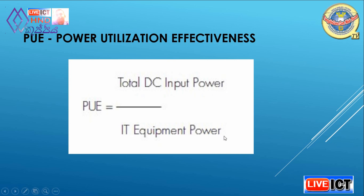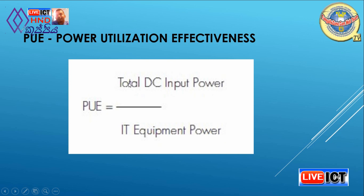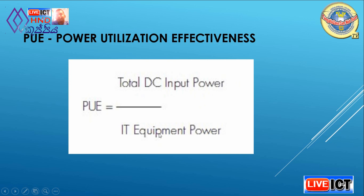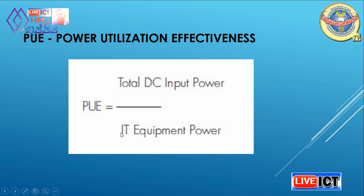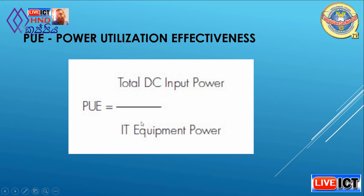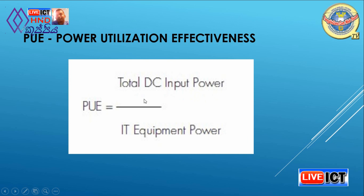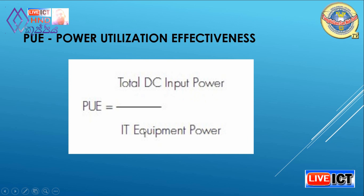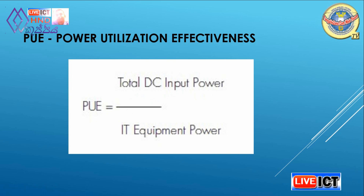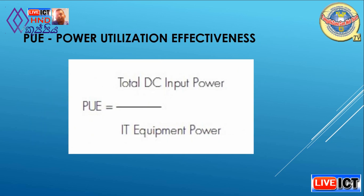For example, the input power is 100,000 kW and the IT equipment power is 50,000 kW. The value of 100,000 divided by 50,000 kW gives a PUE value of 2, and the value of the DCIe is 50%.